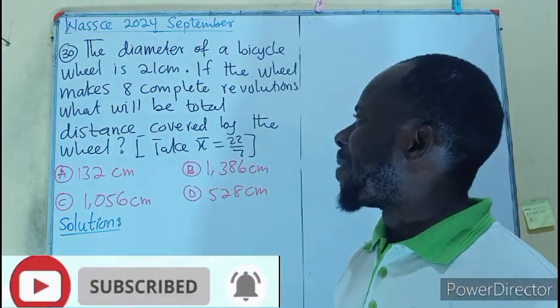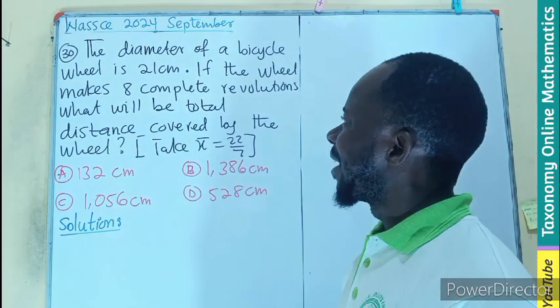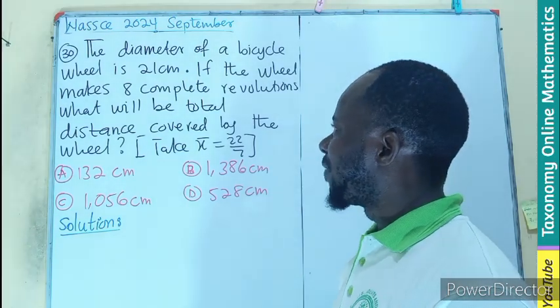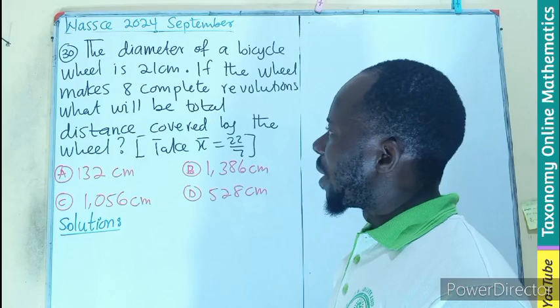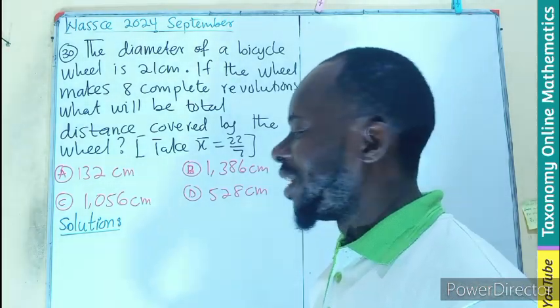The diameter of a bicycle wheel is 21 cm. If the wheel makes 8 complete revolutions, what will be the total distance covered by the wheel?